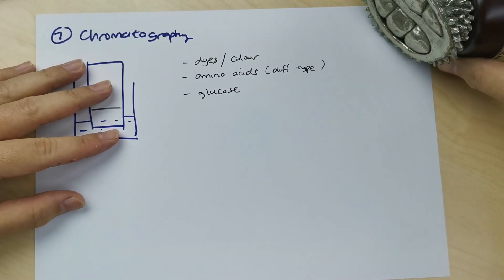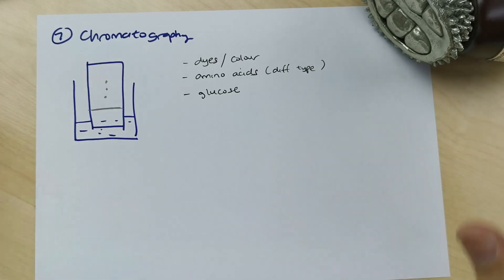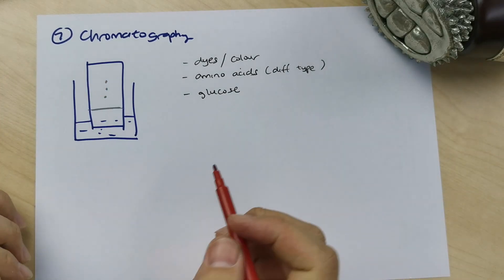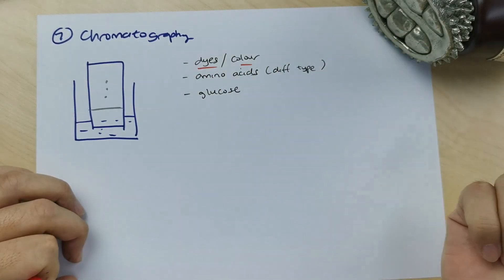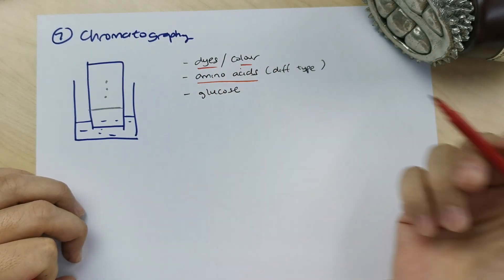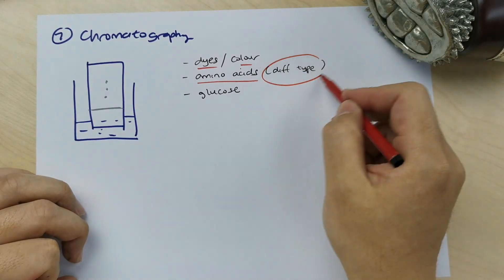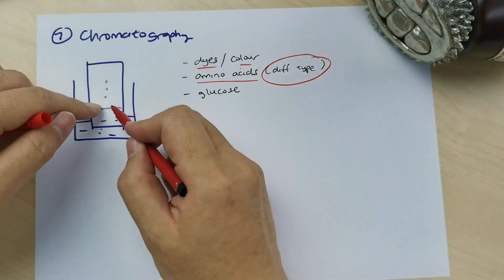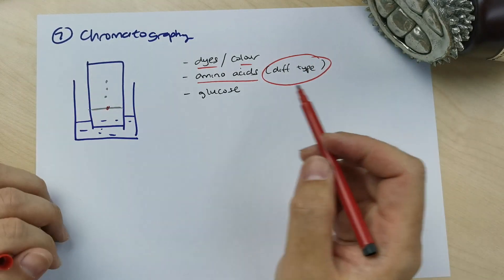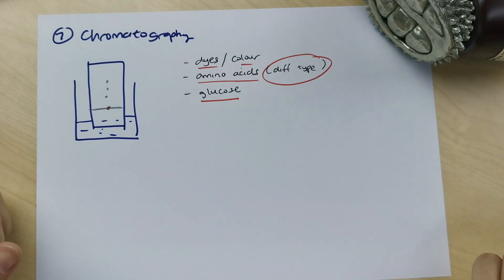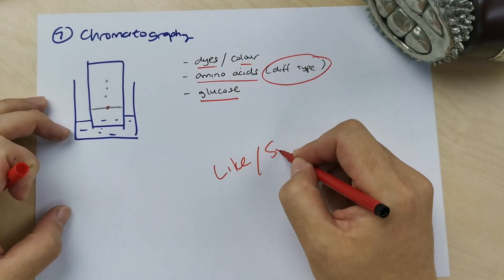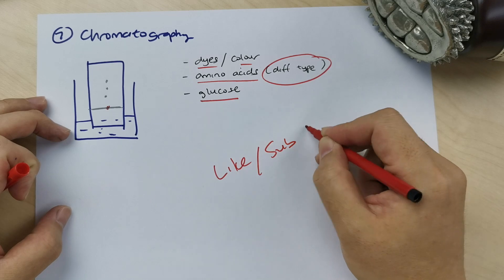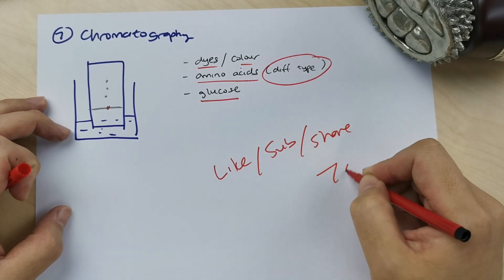The last method is chromatography. Chromatography is used to find the number of colors or components in a mixture. It's popular for identifying amino acids — to determine what type of amino acids are in a sample — and also for identifying glucose. If you found this video helpful, please like, subscribe, and share.